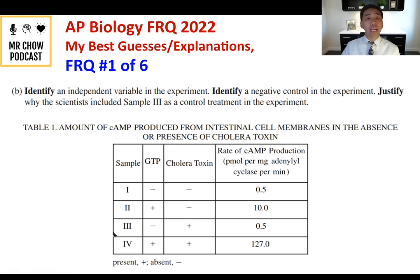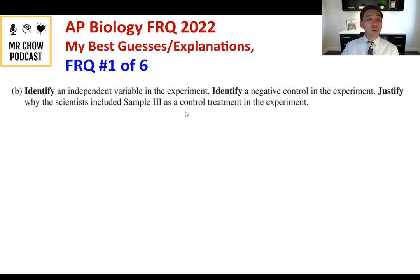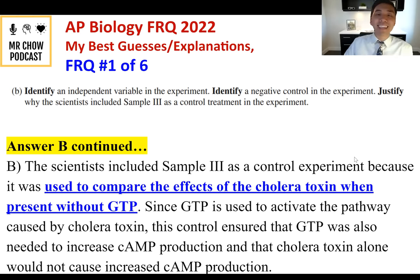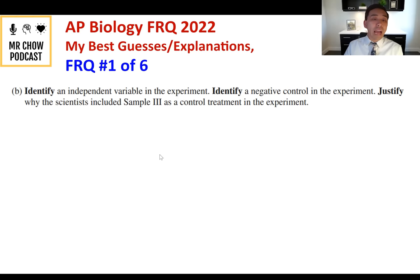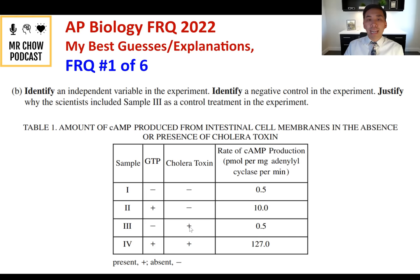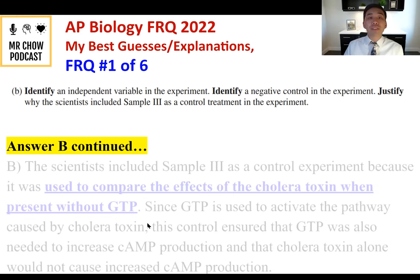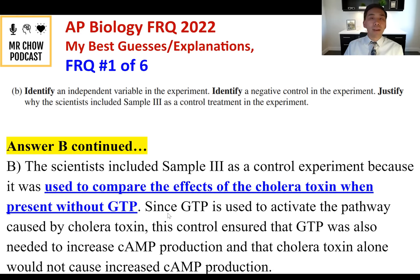Justifying sample three as a control: scientists included sample three because it was used to compare the effects of cholera toxin when present without GTP. Since GTP is needed to activate the pathway caused by cholera toxin, this control ensured that GTP was also needed to increase cAMP production, and that cholera toxin alone would not cause increased cAMP production.